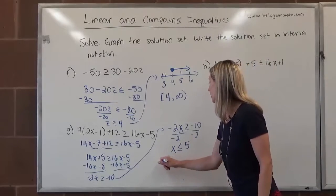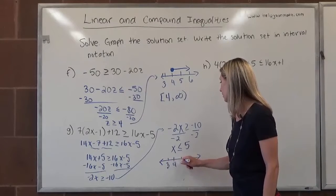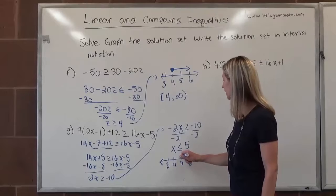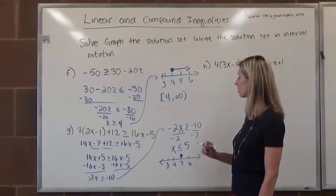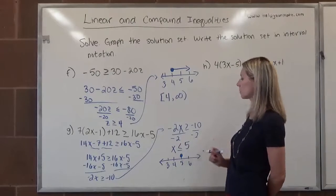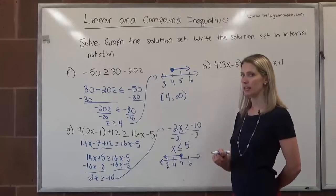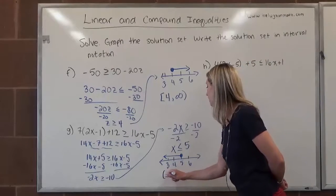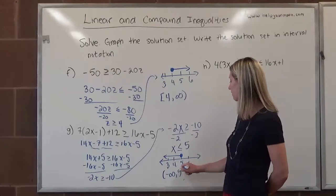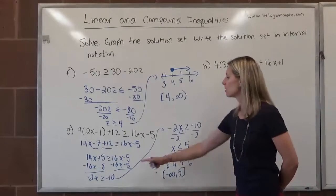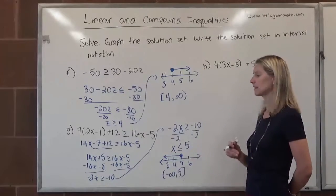On a number line, we include 5: 3, 4, 5, 6. Over 5 is a closed circle to indicate that 5 is itself a solution. Numbers smaller than 5 are to the left. In interval notation, there is no least number smaller than 5, so we would say negative infinity to 5. We close off 5 with a bracket since it is part of the solution set. Those are the three different ways to express x is less than or equal to 5.